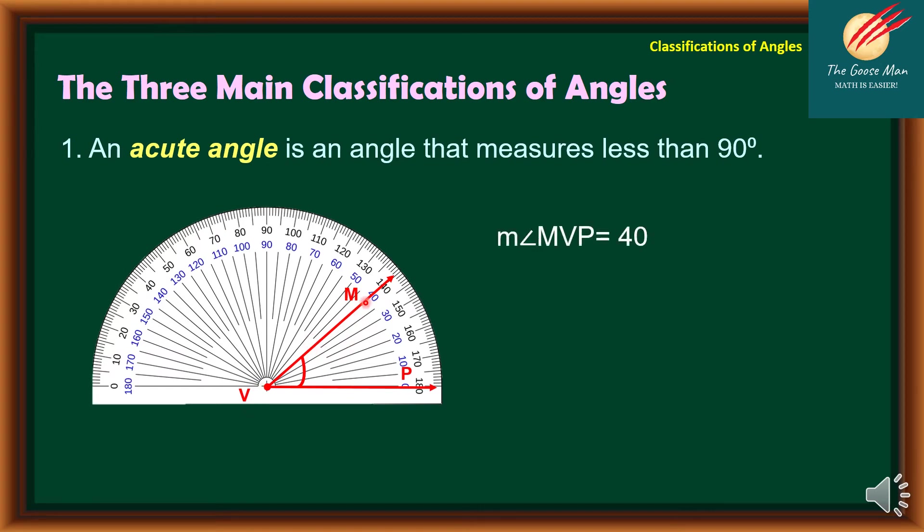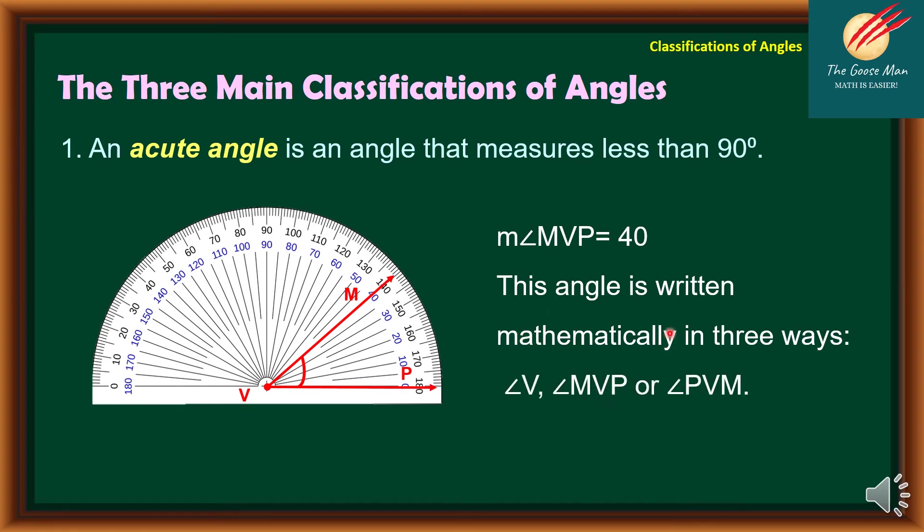We can say that the measure of angle MBP is equal to 40. This angle is written mathematically in three ways: we can rewrite this one as angle B, angle MBP, or angle PBM.